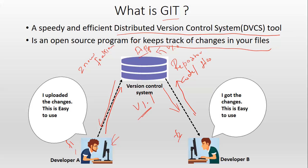Now you understand the importance of Git. Git allows us to track different versions of our application or files. Additionally, whatever changes are done by Developer A can be pulled by Developer B, or vice versa — Developer B can pull the changes made by Developer A from the repository to his local system. This is the core functionality of Git. Thanks for watching — please subscribe, like, comment, and share with your friends.